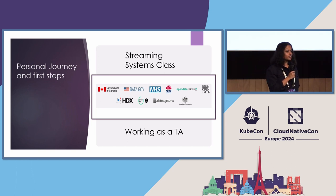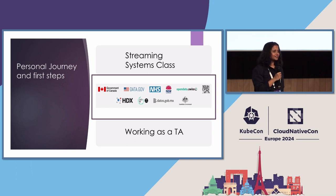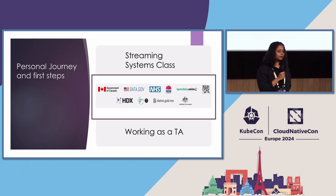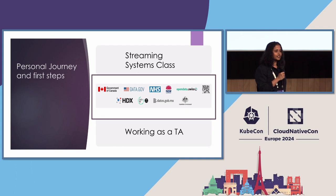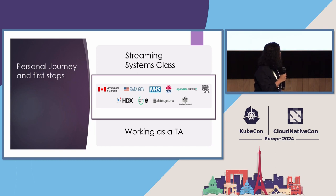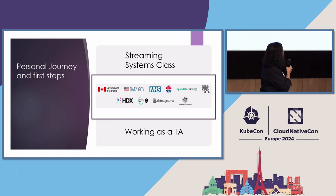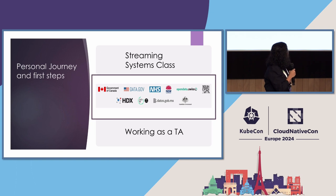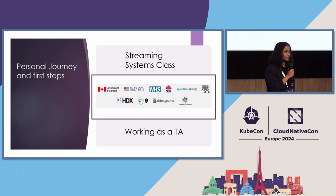I started working on a project called Seekan, a data management system. If you have publicly available data, it helps you host, store, and display it. It has its own theming libraries and you can use it out of the box. A lot of government websites use it — in fact, the Boston city government also uses it. I thought it was pretty cool, so I wanted to get into more open source work, and I started working more and more with Spark.